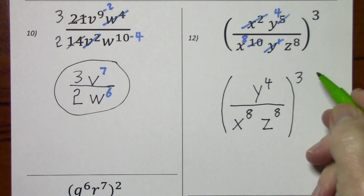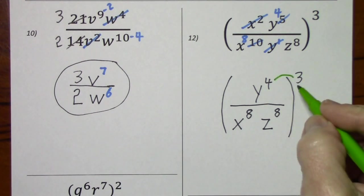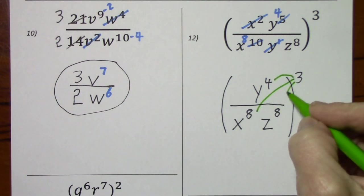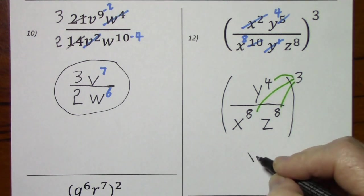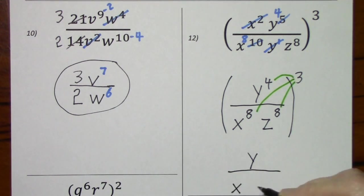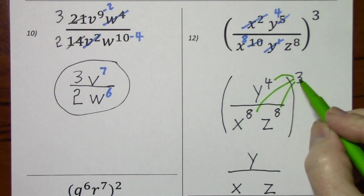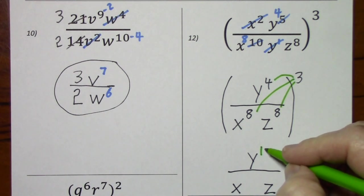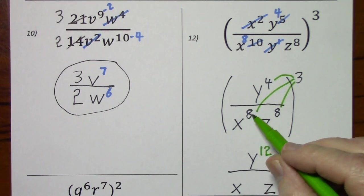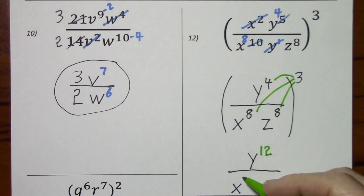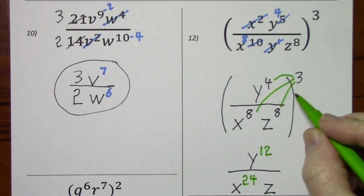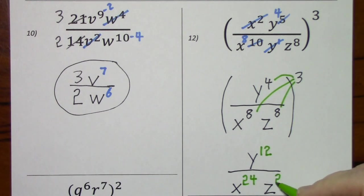So now we use the power rule, that is multiply 3 times each exponent. So this would give us y to the 12th, x to the 24th, and z to the 24th.